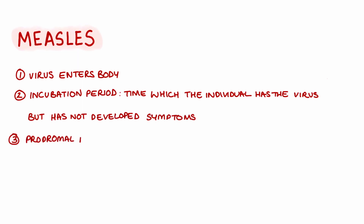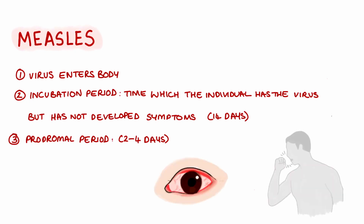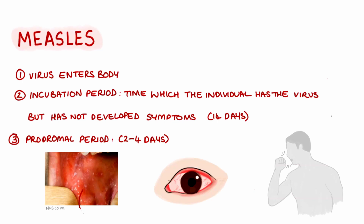After this period, symptoms will start to occur. This is known as the prodromal phase. This is when the pathogen continues to multiply, but now symptoms can also be experienced because the immune system has been activated. The initial symptoms of this period include high fever, conjunctivitis, coryza, and cough.